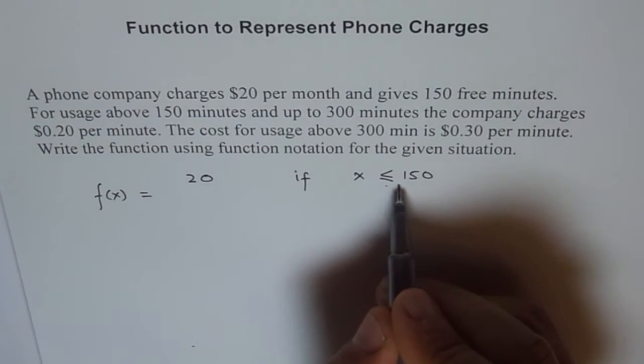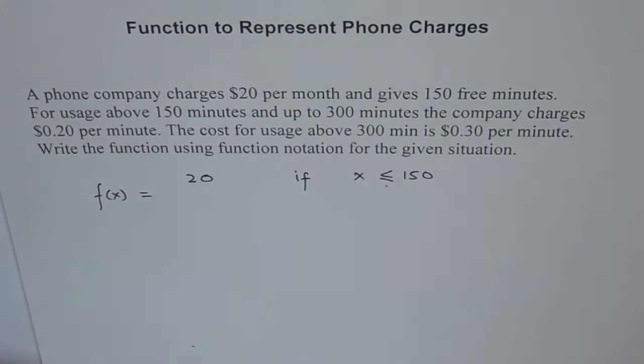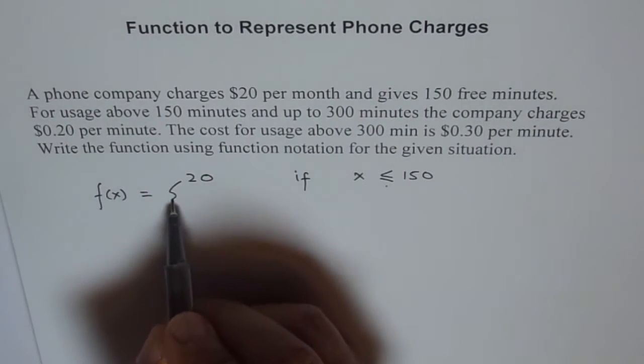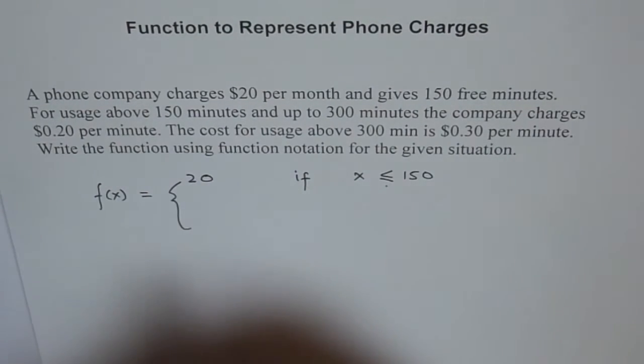So if x is less than or equal to 150 minutes, then the company charge is $20. So three pieces, this means three different pieces.